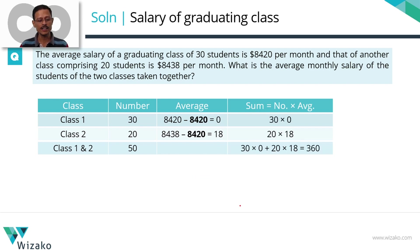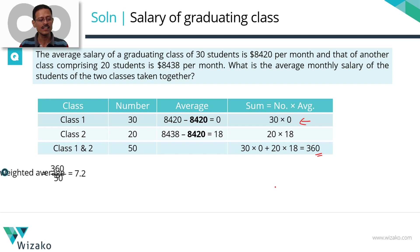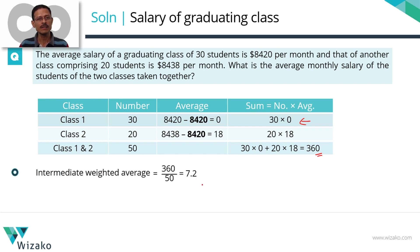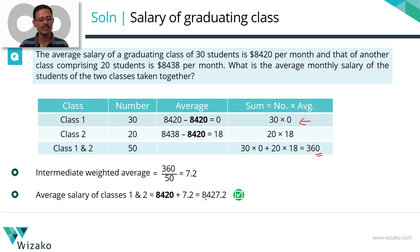Let's see it in printed form. We subtracted 8420 so the first class salary sum is zero. Second class sum is 360. Sum of salaries of both classes taken together is 360 ÷ 50 = 7.2. That's the intermediate average. Add back whatever you subtracted to get the final average: 8427.2.